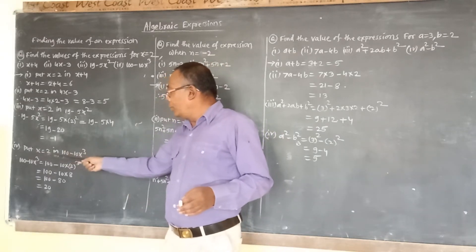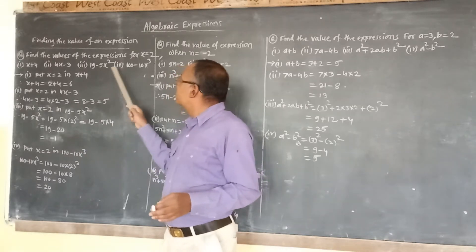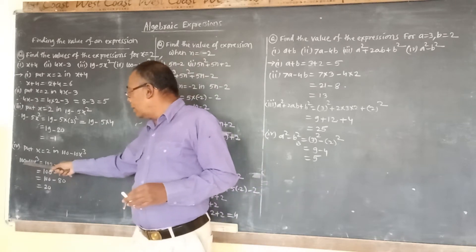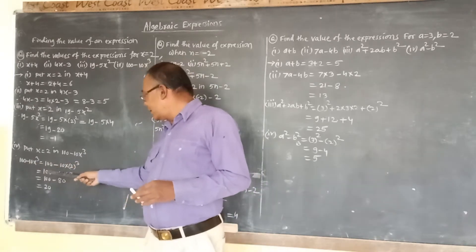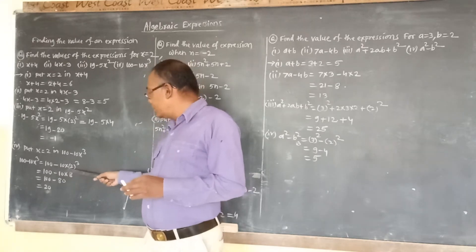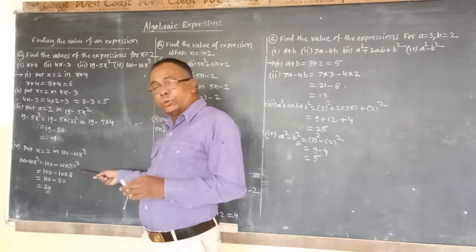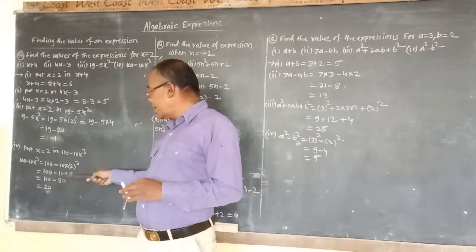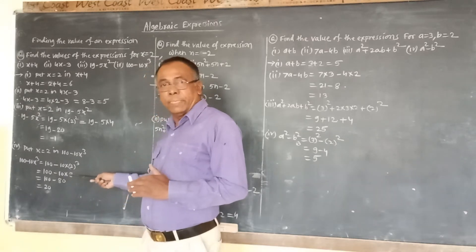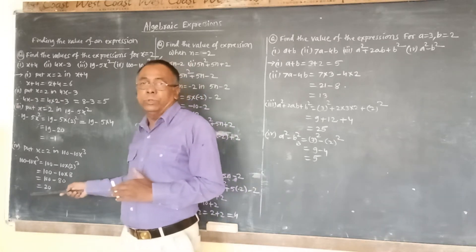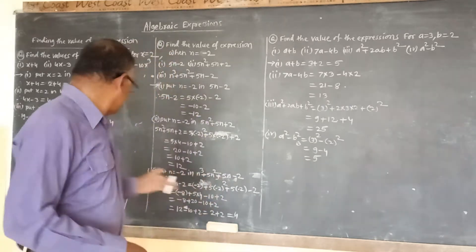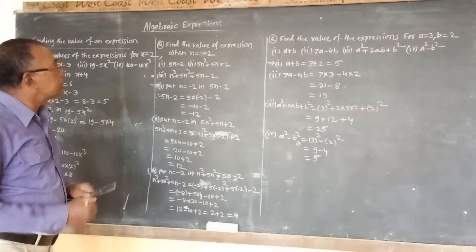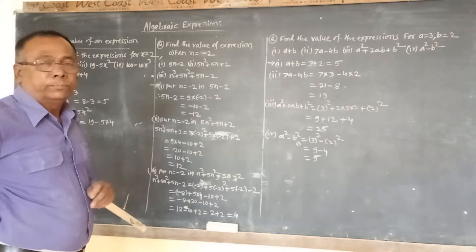Now put x equal to 2 in the fourth expression, 100 minus 10x cubed. So 100 minus 10x cubed equals 100 minus 10 into 2 cubed. Here 2 cubed means 8, so we get 100 minus 10 into 8. Ten eights are 80, so 100 minus 80 equals 20. Therefore, 20 is the value of the fourth expression. This completes the first question.